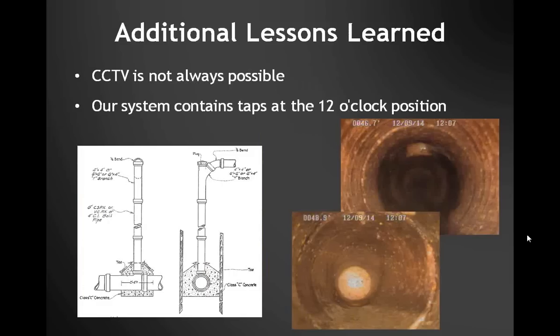There are instances when TV inspection is not always possible, but we can still obtain valuable data. Some connections in our system enter at a 12 o'clock position in the main — a standard construction detail from 1960 shows a typical setup with break-in taps that bend at a Y to run horizontally toward the property. This creates a situation where in most cases the lateral camera cannot push its way into the horizontal portion of the lateral. In most of these cases, our intention is to excavate and replace with a new drop house connection entering at a 45-degree angle, involving a point repair at the connection to properly abandon the old main connection.